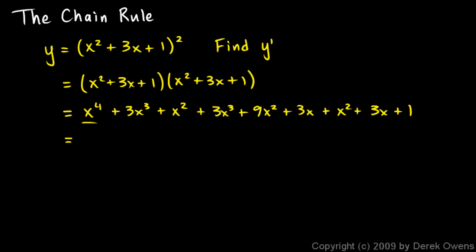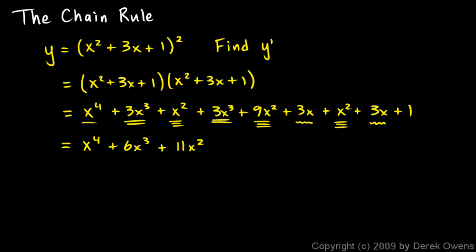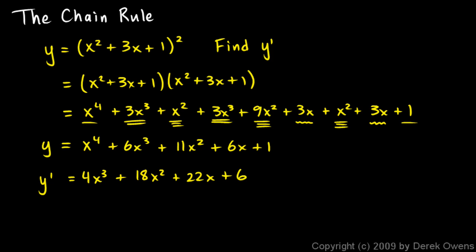Let's simplify this. We've got our x to the fourth, then we have 3x cubed plus 3x cubed, so that's plus 6x cubed. That gives me plus 11x squared. Then I have 3x plus 3x, so that's plus 6x, and then plus 1 at the end. So this is just another way to write function y. Now we can find y prime using the power rule on each term: 4x cubed plus 18x squared plus 22x plus 6.